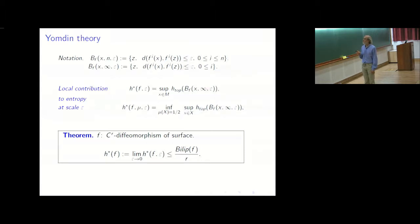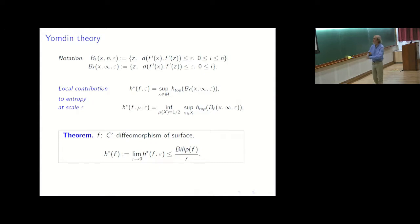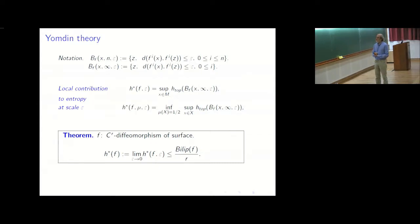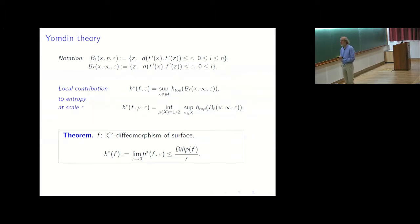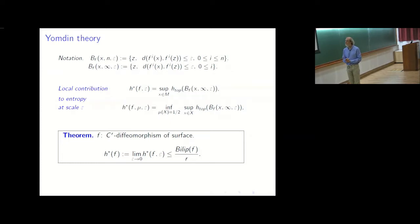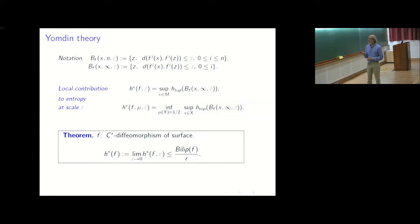You take the supremum over all balls; this is the tail entropy at scale epsilon, and then the tail entropy itself is the limit as epsilon goes to zero. You can do the same for measures: if you have an invariant measure you restrict to points inside sets with large measure. Yomdin theory bounds this tail entropy by the Lipschitz norm of f divided by the smoothness, for a C^r diffeomorphism.